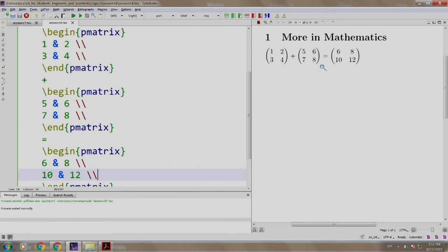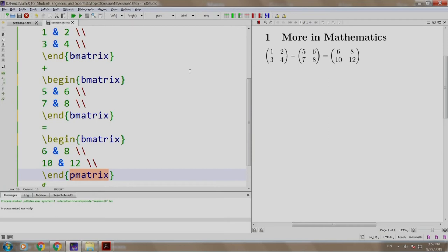Let us change from round brackets to box bracket. So instead of P matrix, we change it to B matrix. Let us build and run.